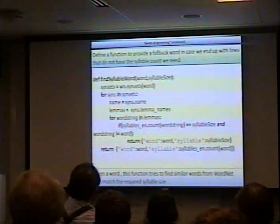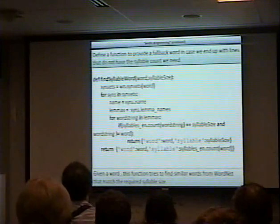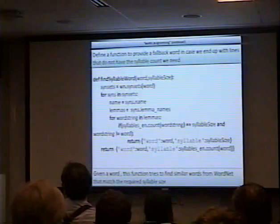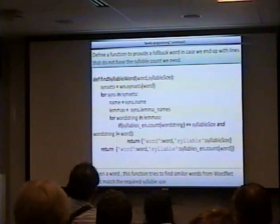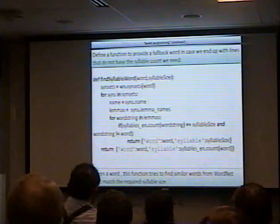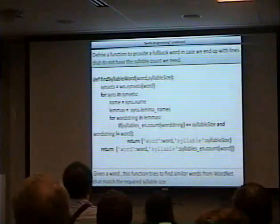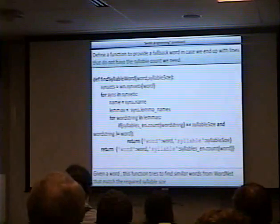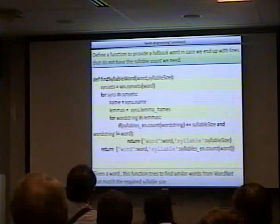For each one, we're actually going to get the synset of that word passed into here. This function is going to return a word — a tuple containing the word and the syllable count of that word if it matches. Otherwise it's just going to return the same word. It's not going to work 100% because you're not guaranteed that it will find something similar in WordNet, but it's good enough.